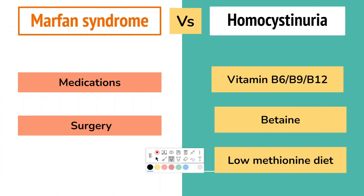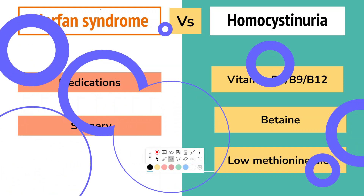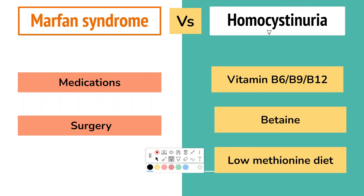There is no cure for either disorder. In Marfan syndrome, treatment depends on the area of the body affected and includes medications such as beta blockers and angiotensin receptor blockers, as well as surgical intervention. In the case of homocystinuria, patients usually respond to supplements like vitamin B6, B9, and B12, betaine, and a low methionine diet.